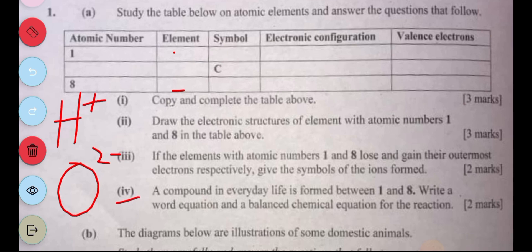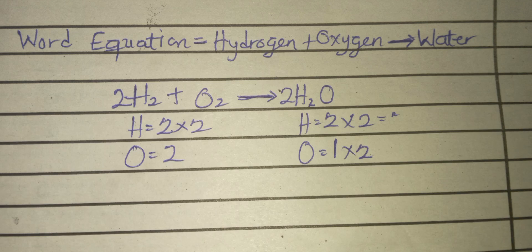Part four: A compound in everyday life is formed between 1 and 8. Write a word equation and a balanced chemical equation for the reaction. First, the word equation, and then the balanced one.